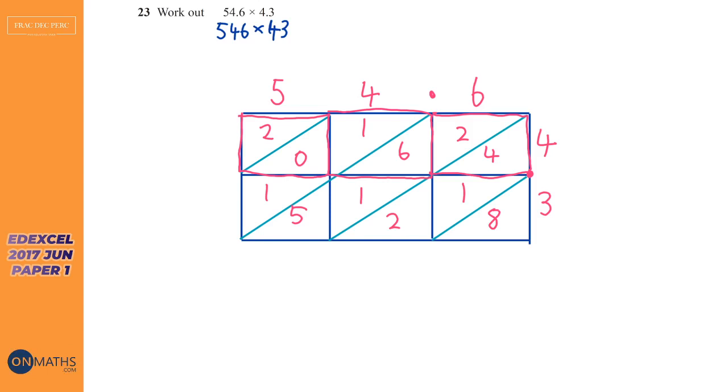Now we add the numbers, and I'm trying to pick a nice colour so we can see it. We add the numbers starting on the bottom right, so this one here. So it's just going to be 8. And we add these ones here. 2 plus 1 is 3, plus 4 is 7. We add these ones here. So 5 plus 1 is 6. 6 plus 6 is 12. 12 plus 2 is 14. So we're going to carry a 1. Add these ones here. 1 plus 1 plus 1 is 3. And then add this one here, which is 2.